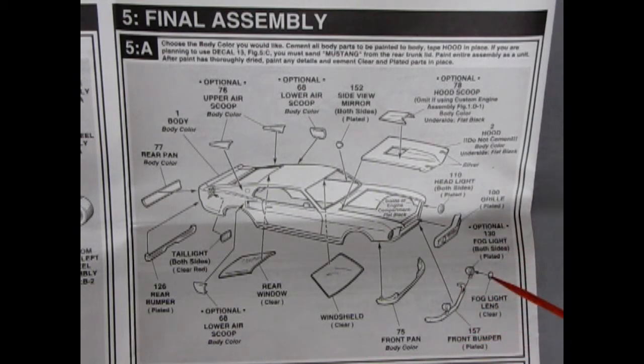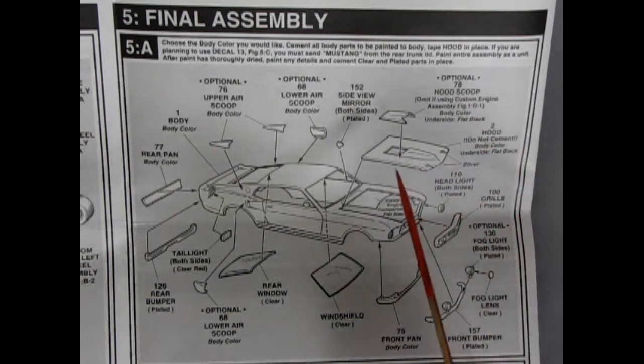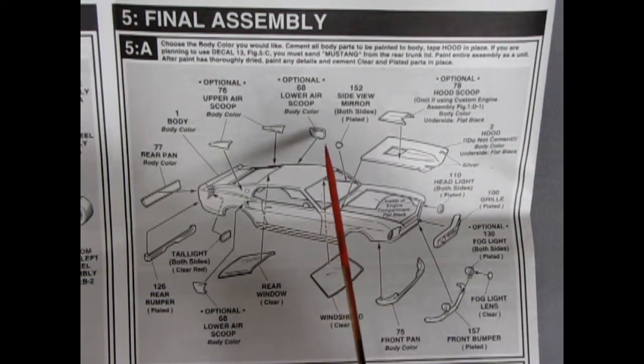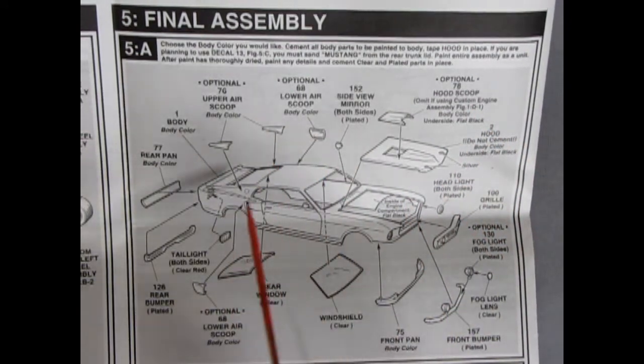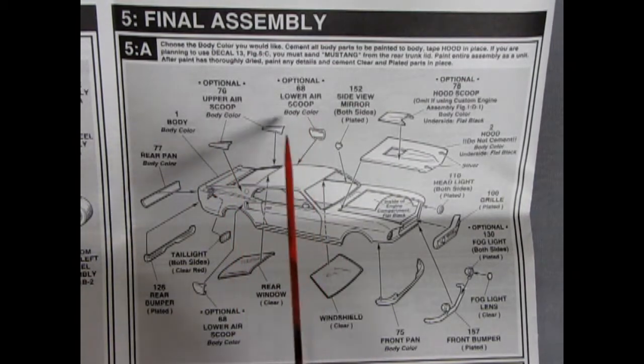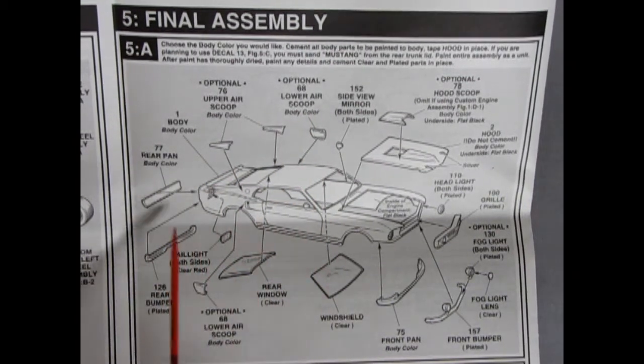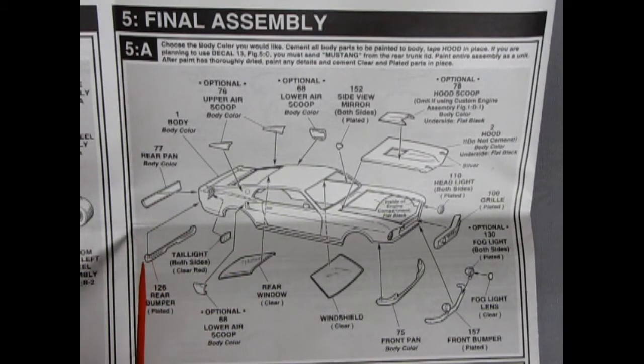Then you've got the special front bumper with fog lights that you can glue on. They're optional, the fog lamps. Hood do not cement. Body color on top, underside is flat black. Optional hood scoop, omit if using custom engine assembly, figure 1D. Body color, underside flat black. Then we've got side mirrors going in, the little scoops all over the place. Those are optional. The body itself, the rear body pan, rear bumper, and tail lights all are going in in this assembly.